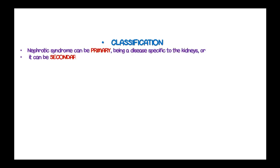Nephrotic syndrome can be classified into two types: primary nephrotic syndrome, which is a disease specific to the kidneys, or secondary, being a manifestation of a systemic general illness.